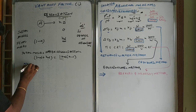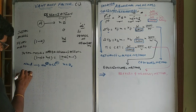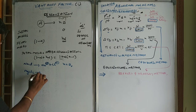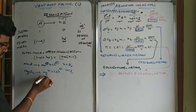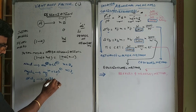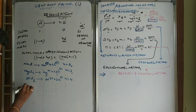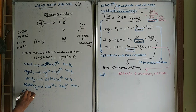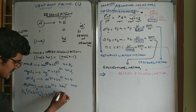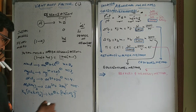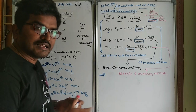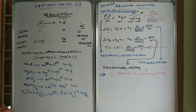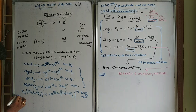Some examples: NaCl → Na⁺ + Cl⁻, n = 2; MgCl₂ → Mg²⁺ + 2Cl⁻, n = 3; AlCl₃ → Al³⁺ + 3Cl⁻, n = 4; Al₂(SO₄)₃ → 2Al³⁺ + 3SO₄²⁻, n = 5; K₄[Fe(CN)₆] → 4K⁺ + [Fe(CN)₆]⁴⁻, n = 5. Identifying the n value is the crucial part.